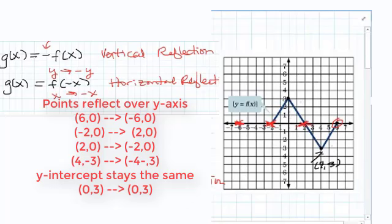The point (0,3), well, if you change 0 to negative 0, it doesn't change, right? So that's going to stay the same. And then this point (4,-3) is going to change to (-4,-3) over here.